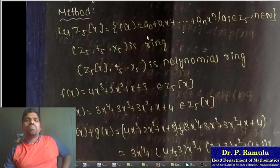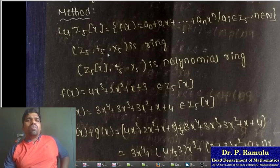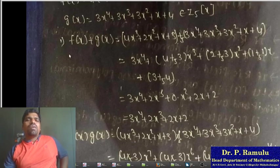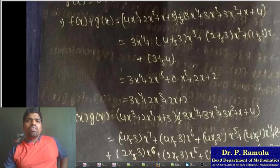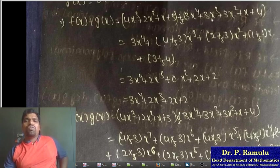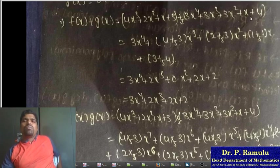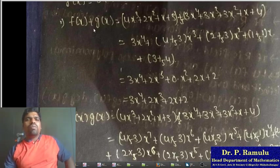In Z_5[x], taking f(x) and g(x) with coefficients a_i belonging to Z_5. Adding f(x) + g(x): the coefficient of x^4 is 3. The coefficient of x^3 is (4+3) mod 5 = 7 mod 5 = 2, giving 2x^3. The coefficient of x^2 is (2+3) mod 5 = 5 mod 5 = 0, giving 0·x^2. The coefficient of x is (1+1) = 2x. The constant term is (3+4) = 7, and 7 mod 5 = 2.